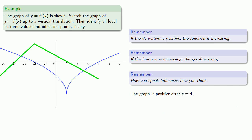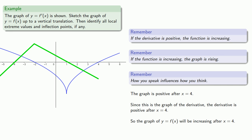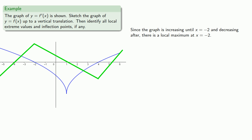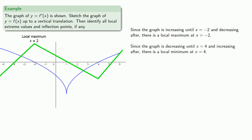In this last segment, the graph of f prime is positive. Since this is a graph of the derivative, the derivative is positive, and so the graph of y equals f of x will be increasing after x equals 4. Think about this stick figure as the skeleton of the graph — it shows us a lot of information. We notice that the graph is increasing until x equals negative 2 and decreasing after, so there's a local maximum at x equals negative 2. Similarly, since the graph is decreasing until x equals 4 and increasing after, there's a local minimum at x equals 4.